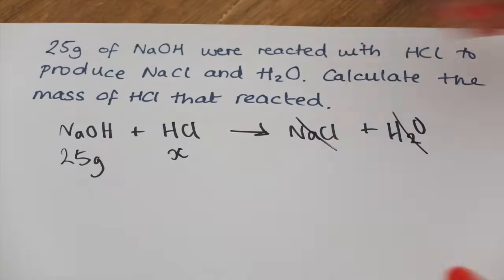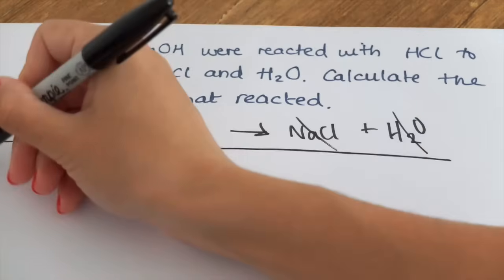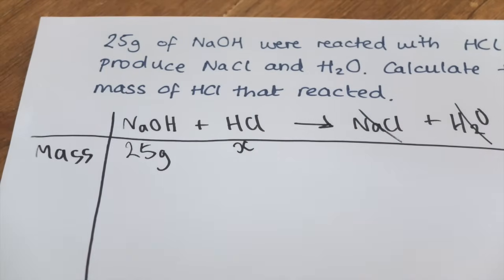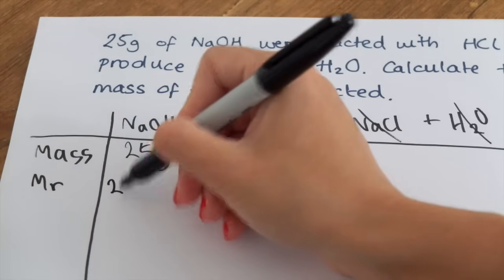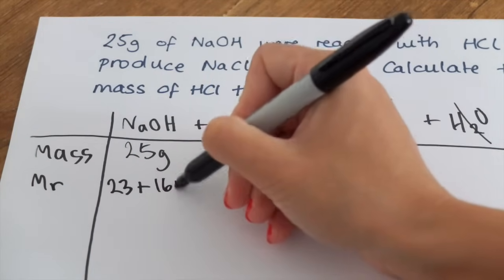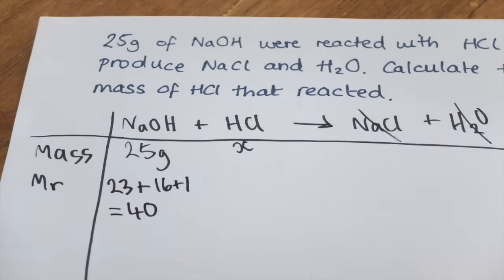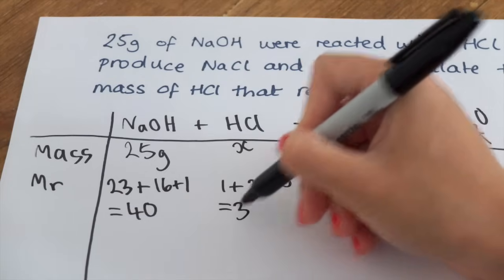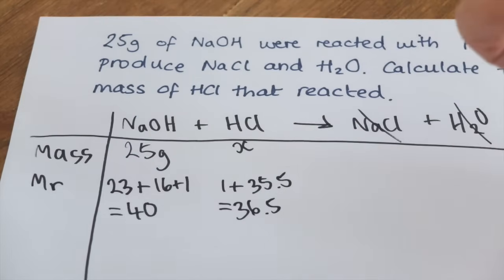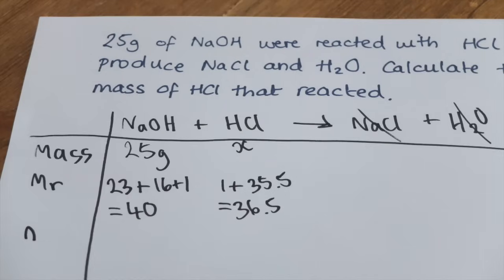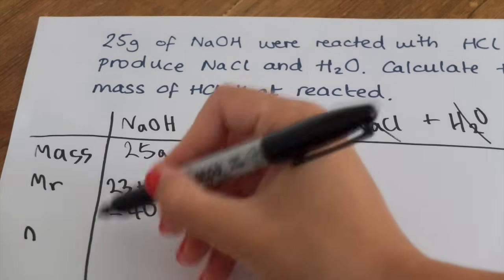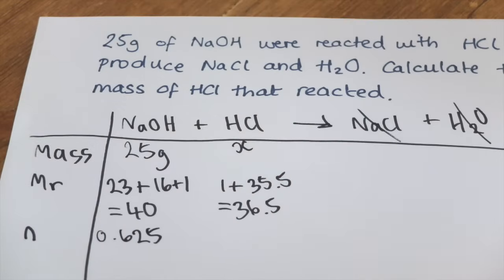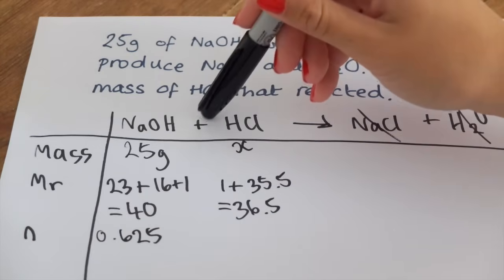Like empirical formulae, I'm going to use a table. I'll write the Mr — the relative atomic mass — so sodium is 23, oxygen is 16, and hydrogen is 1, giving an Mr of 40 for sodium hydroxide. For hydrochloric acid: hydrogen is 1, chlorine is 35.5, so that's 36.5. We have both the mass and the Mr, so we can find the number of moles. Number of moles = mass ÷ Mr, so for sodium hydroxide: 25 ÷ 40 = 0.625 moles.